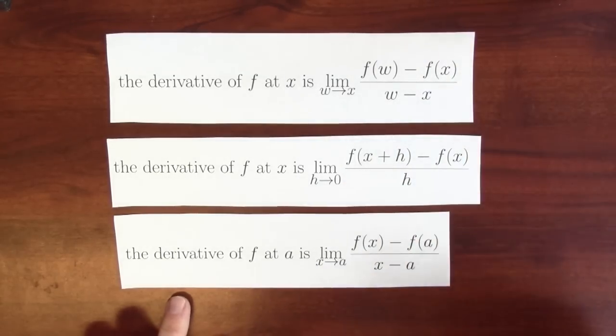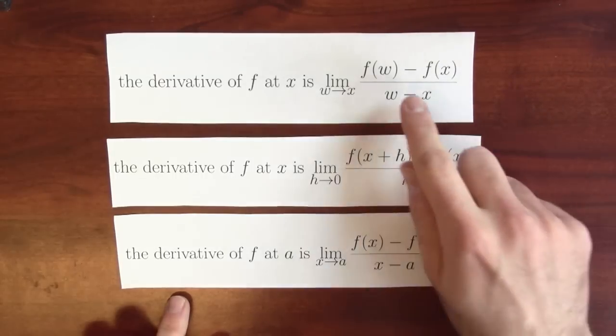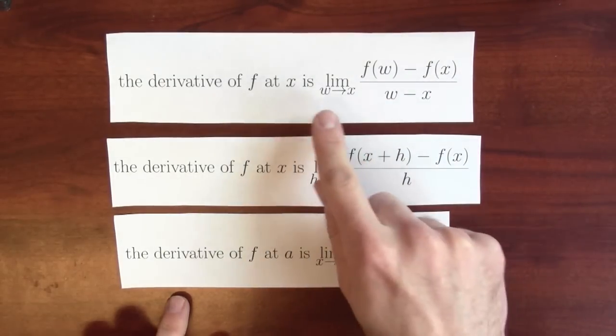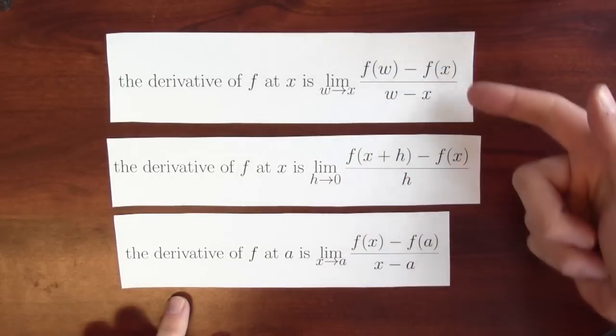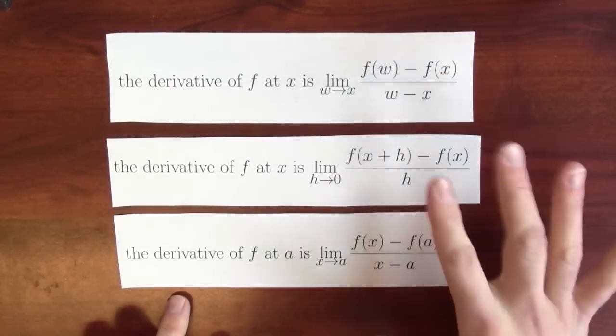You can compare the first and the third definitions here. This first one has a w and an x, and w is approaching x to get the derivative at x. This bottom one, I'm trying to compute the derivative at a, and x is approaching a. So the roles of w and x and the role of x and a are somehow analogous here.